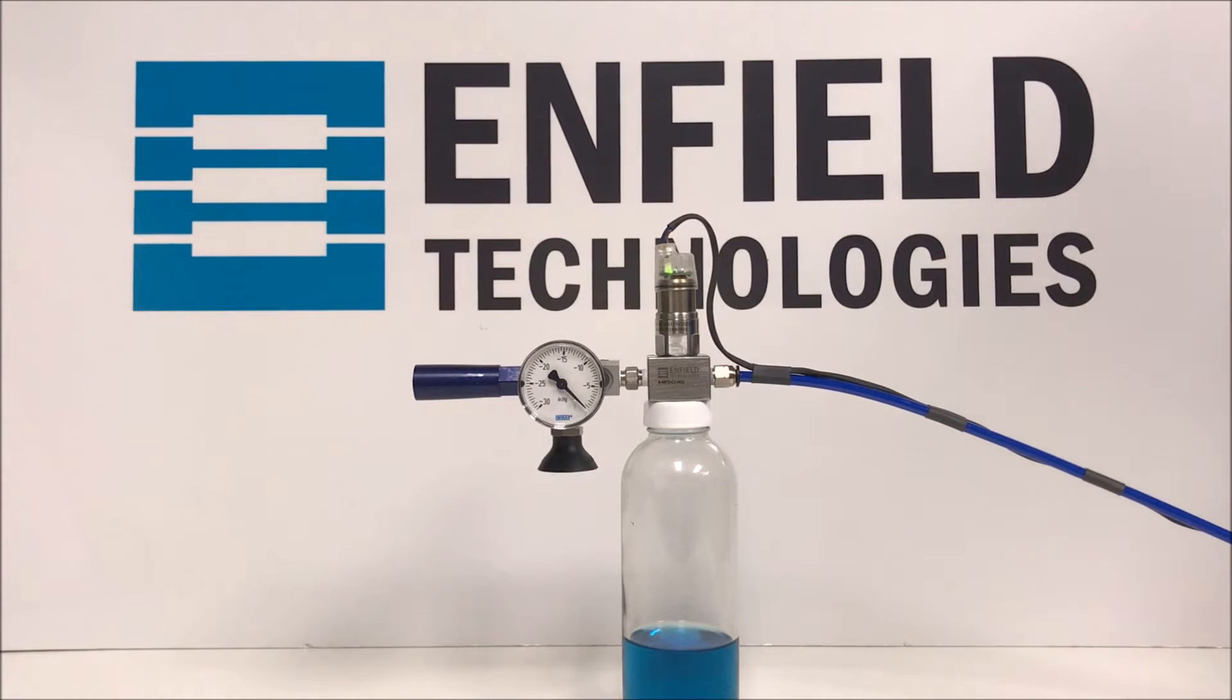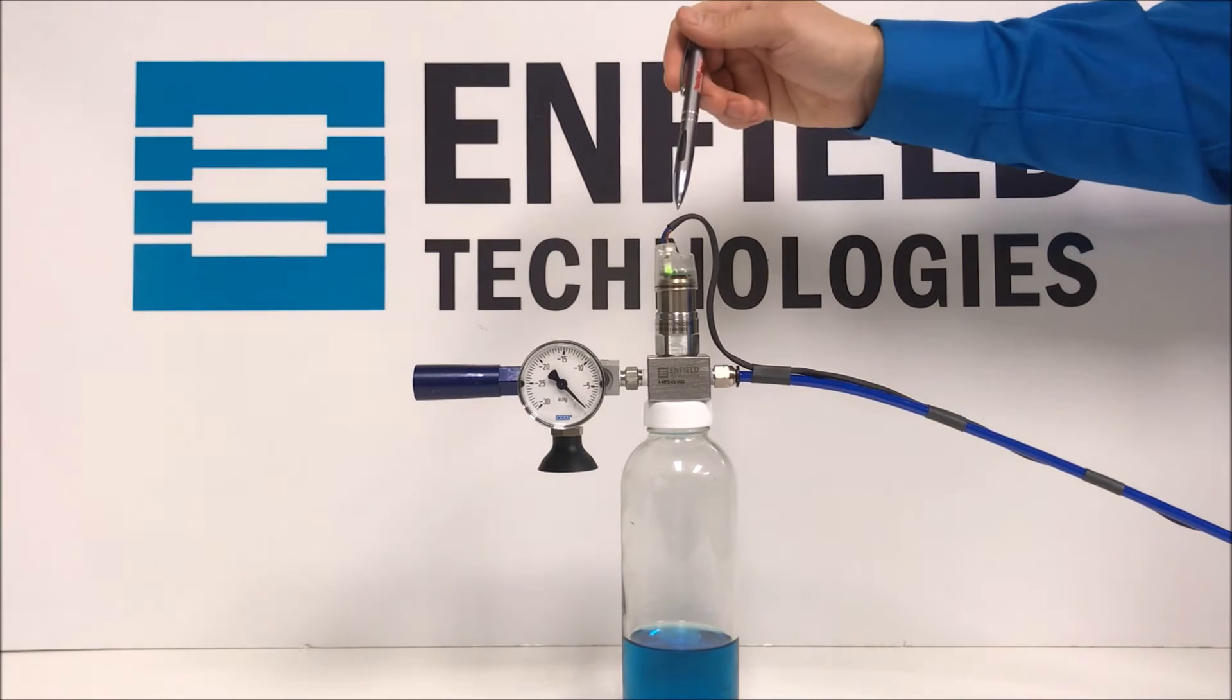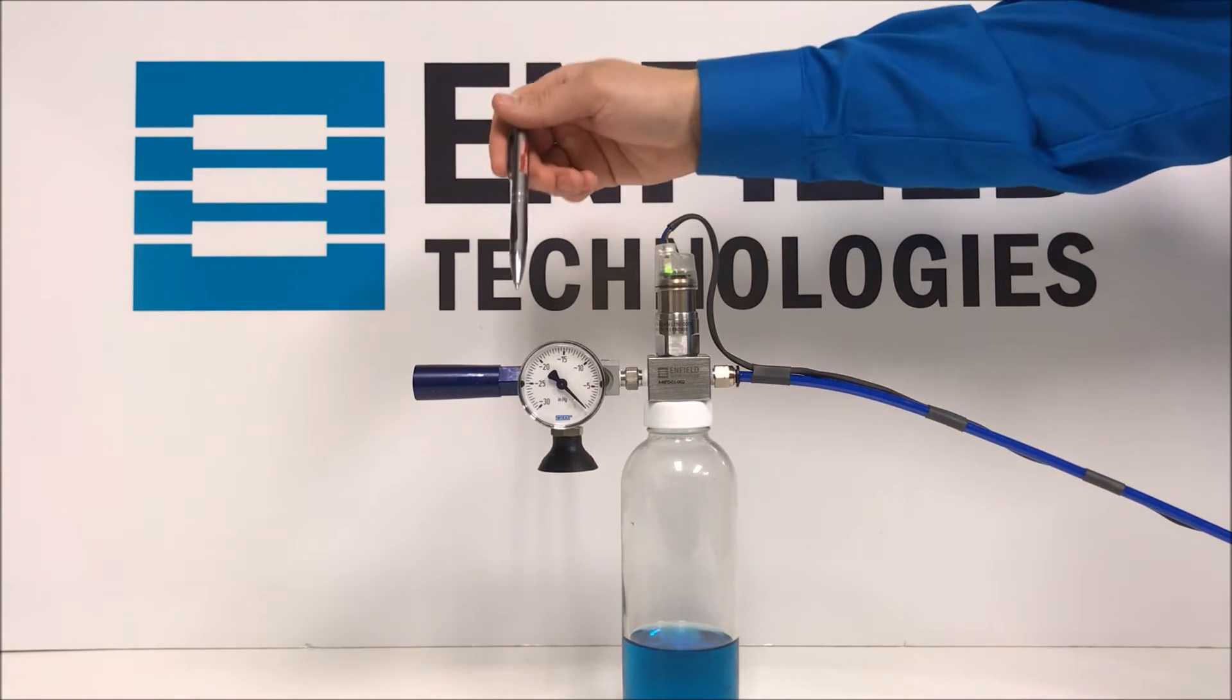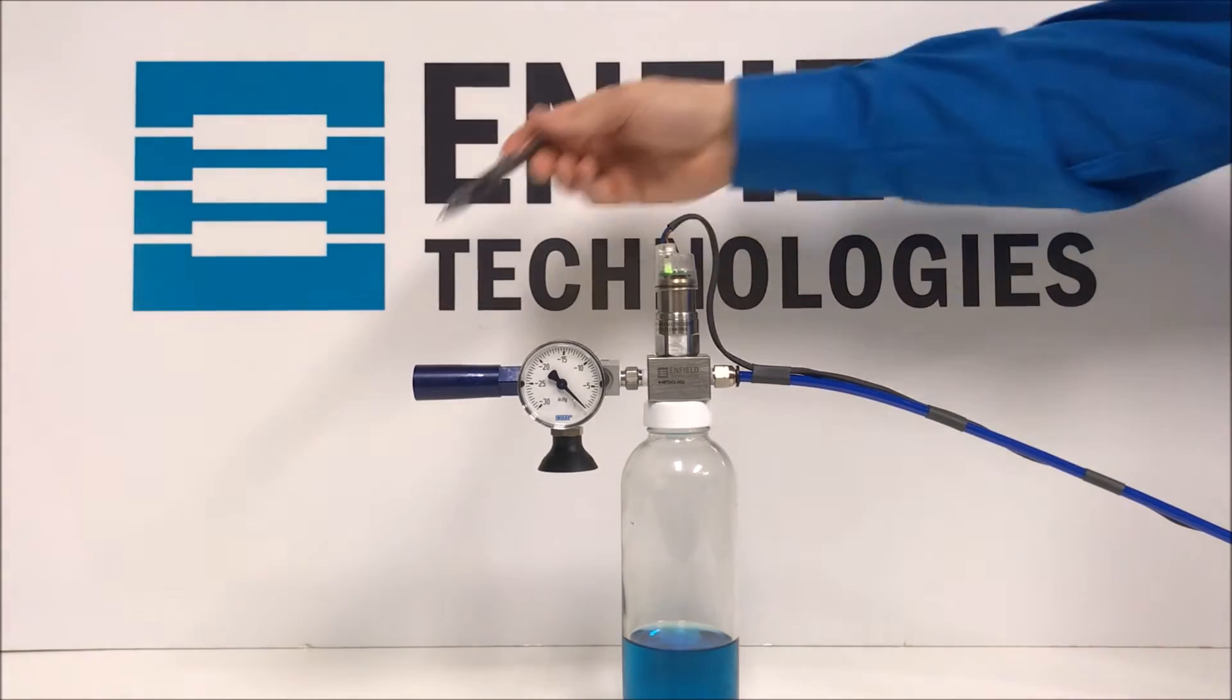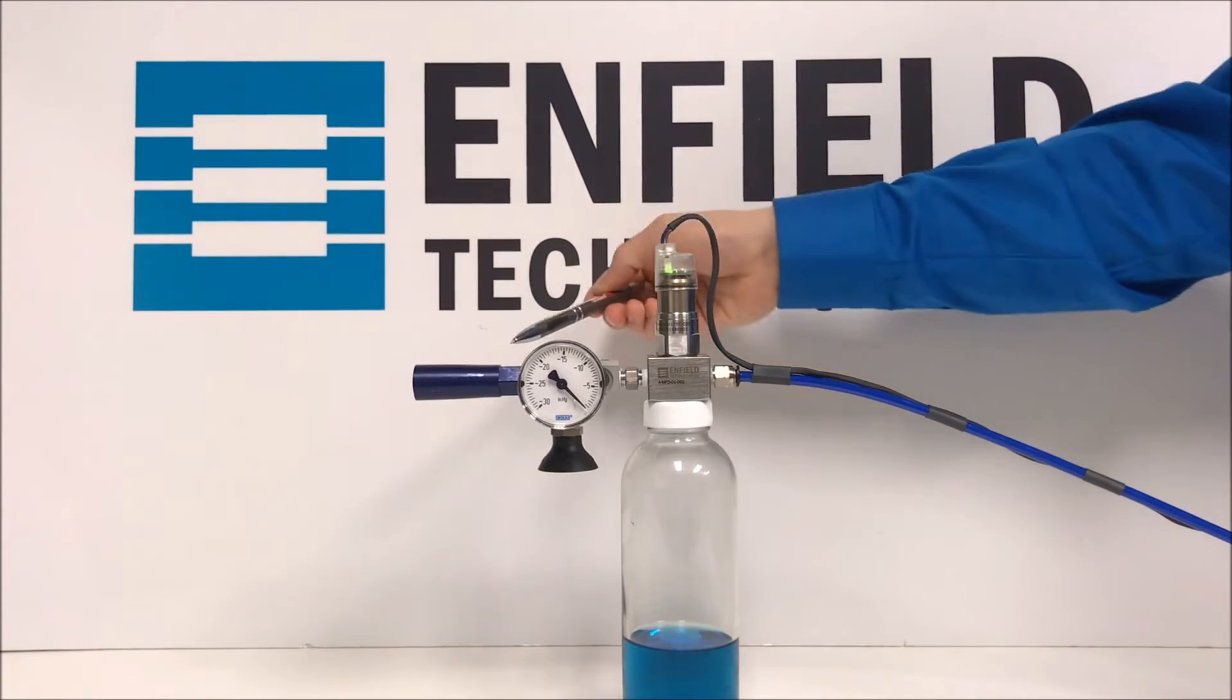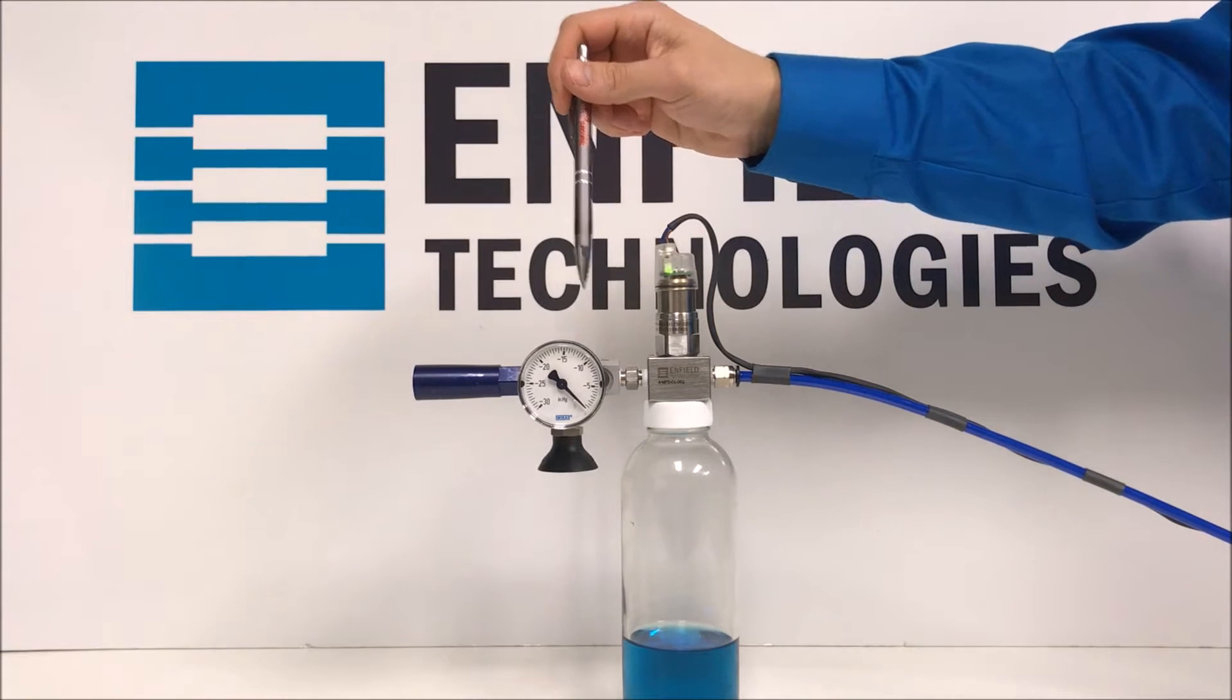Our setup consists of the Enfield PFE proportional valve combined with a Schmaltz EcoPump vacuum ejector. The basic principle of the vacuum ejector is the more air that goes through it, the higher the vacuum level it generates at the suction cup.